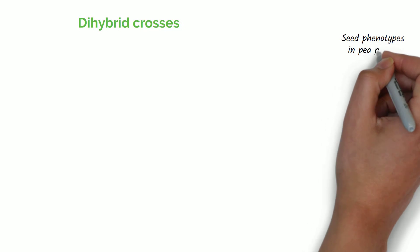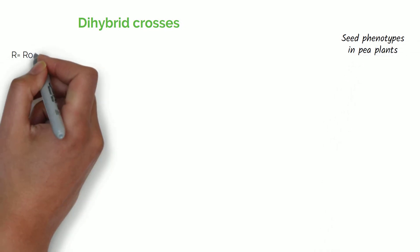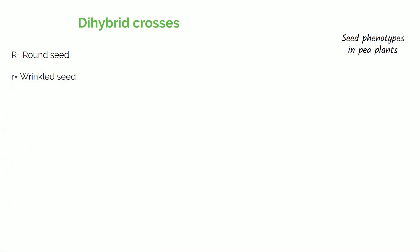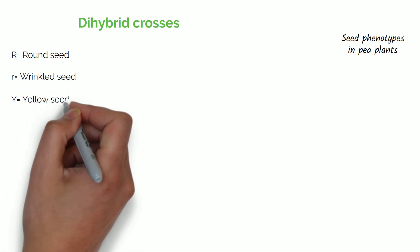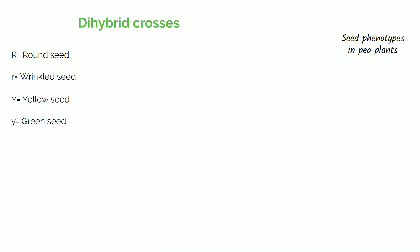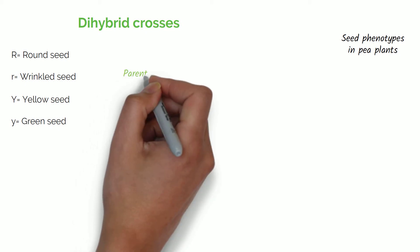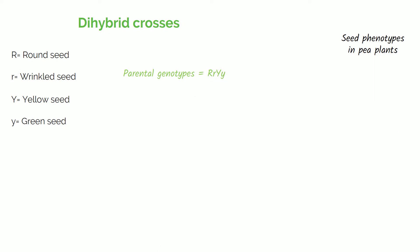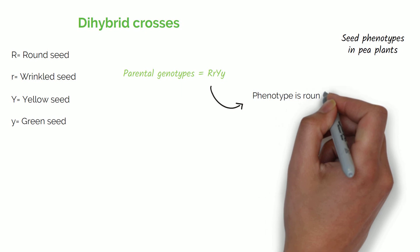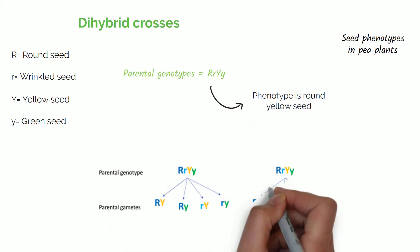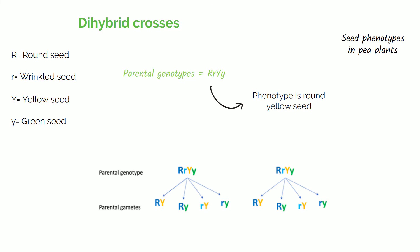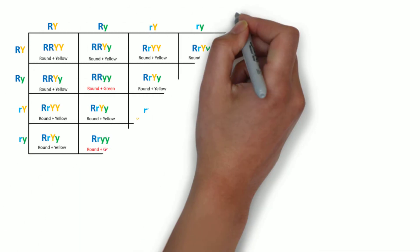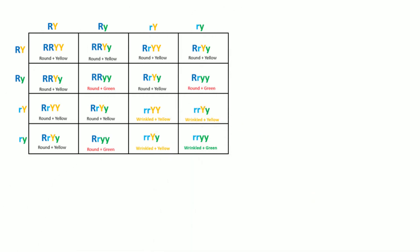Now onto dihybrid crosses. These look at two different genes which are inherited at the same time and contribute to a phenotype. For example, seed phenotypes in pea plants: R equals round seed, r is wrinkled seed, Y is yellow seed, and y is green seed. The parental genotypes are Rr and Yy, meaning they are heterozygous. The phenotype is round yellow seed, as round and yellow are dominant genes. We then split the parental genotype into the parental gametes and produce the diagram for the dihybrid cross.